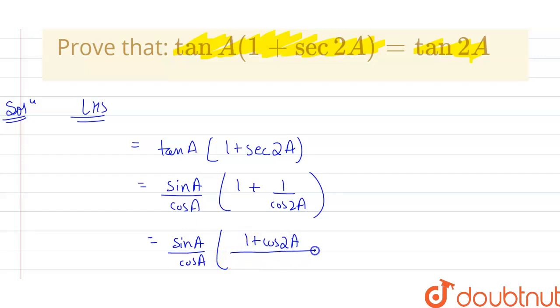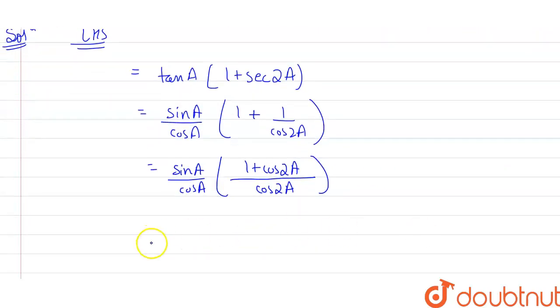So 1 plus cos 2A in the numerator section divided by cos of 2A as we are taking LCM. Now 1 plus cos 2A, we know that cos of 2A is equal to 2 cos² A minus 1. So in that case my 1 plus cos 2A is equal to 2 cos² A.